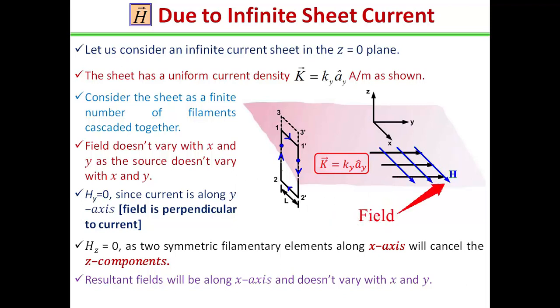Field is perpendicular to the current, and also H_z is equal to 0, as two symmetric filamentary elements along x-axis will cancel the z component. Thus, the resultant field will be only along x-axis, does not vary with x and y.